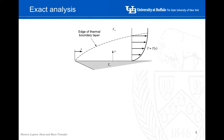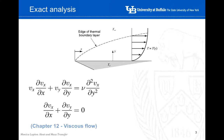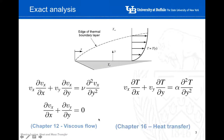Let's begin with the exact analysis. What we're going to do here is similar to what you studied in the analysis of momentum transfer. We consider that there is a very thin layer very close to the boundary of the body, and within that layer this would be the profile of temperature. In the case of momentum transfer, instead of a temperature profile, the analysis included a velocity profile.